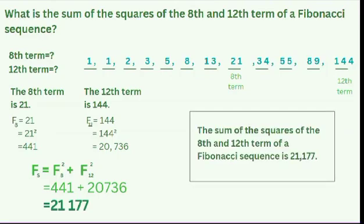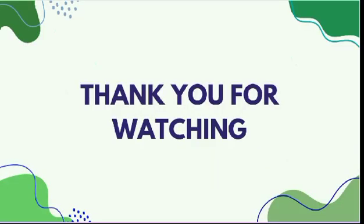Finally, the answer to our question: the sum of the squares of the 8th and 12th terms of the Fibonacci Sequence is 21,177. Thank you for watching.